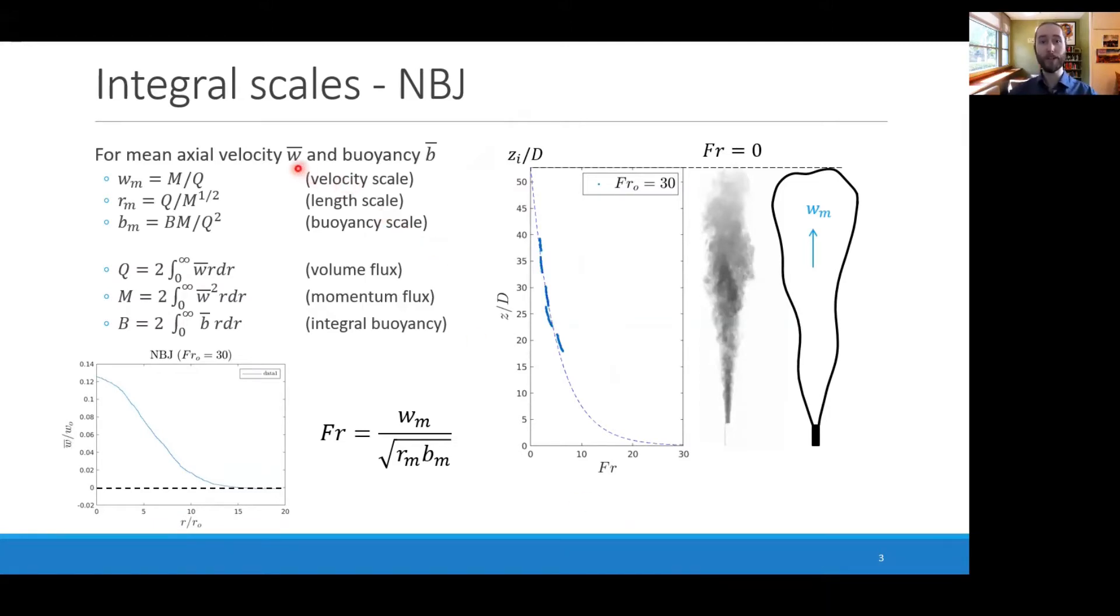We can define velocity, length, and buoyancy scales based on integral quantities of the flow, such as the local volume, momentum, and integral buoyancy, which are obtained by integrating the mean profiles from zero to infinity. Using those scales, we can define a local Froude number, which is defined here, and this is essentially a ratio between the momentum and the buoyancy.